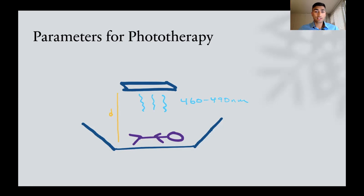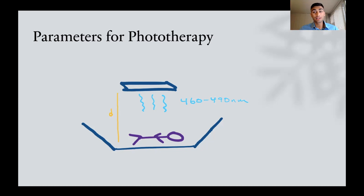Overall, when the baby's undergoing phototherapy, it can be a fairly extended process. Normally they'll be getting phototherapy for between 24 hours to up to five to seven days, so it's not always just a short couple-hour process — sometimes it takes multiple days.